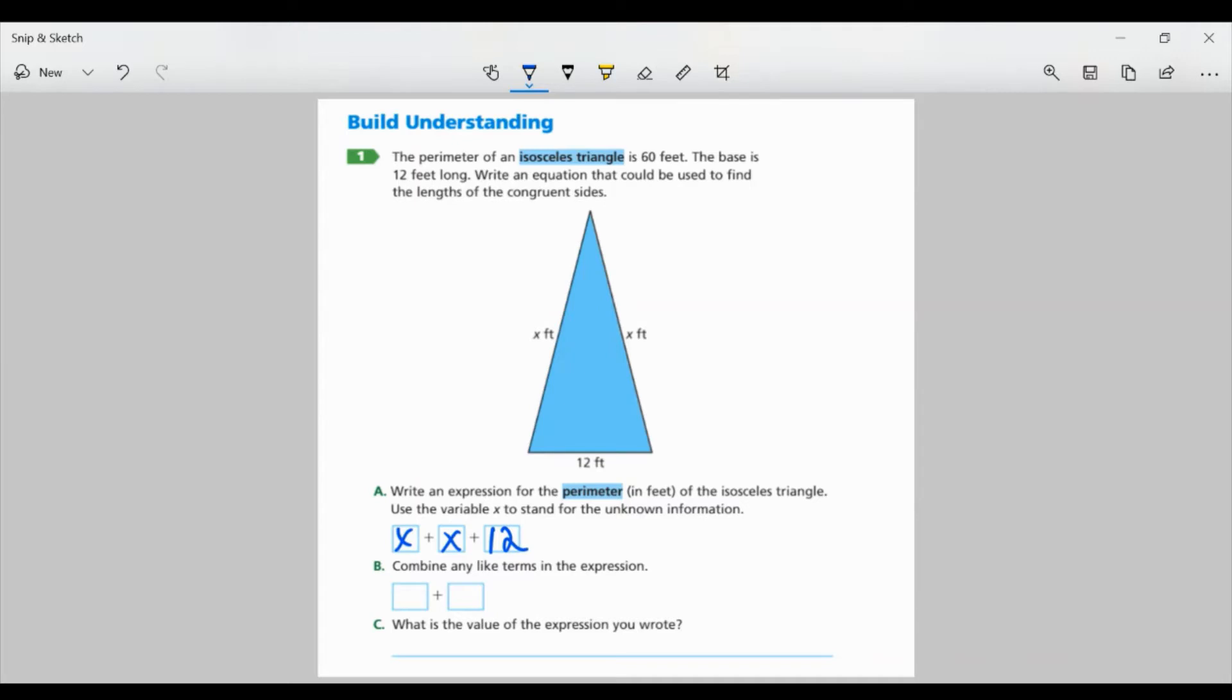Part B, combine any like terms in the expression. Well, I do have like terms, right? I have two variables that are the same, and I have a constant, which is just the number. So I have to add both of those together. My two X's, right? Those are the like terms. So 1X plus 1X equals 2X. So my new expression with the combined like terms is 2X plus 12.